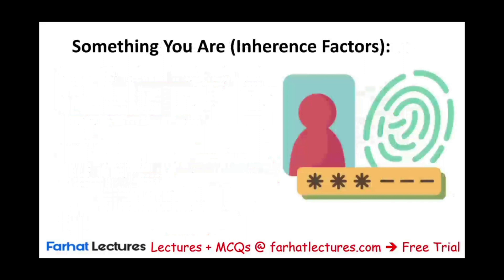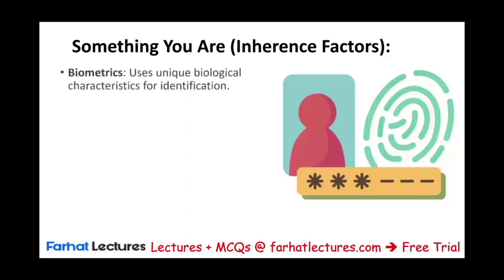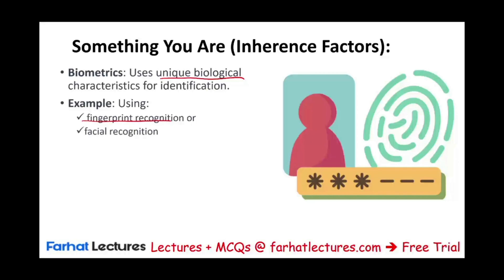Or you can have something you are — the inheritance factor — which is essentially your biological footprint. Biometrics uses unique biological characteristics for identification. Examples include fingerprint recognition, facial recognition, or voice recognition. Simply put, most phones now have facial recognition, and with modern phones they can also do facial recognition with or without a mask — this is post-COVID.